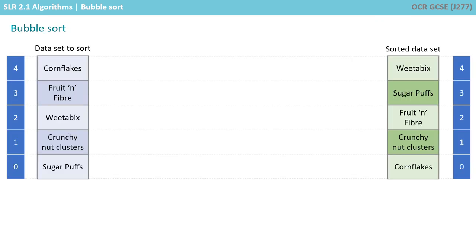Here's a dataset of breakfast cereals. The original data to sort is shown on the left, and the sorted data that we're trying to achieve is shown in green on the right. The object is to put them in alphabetical order with the lowest one at the bottom.